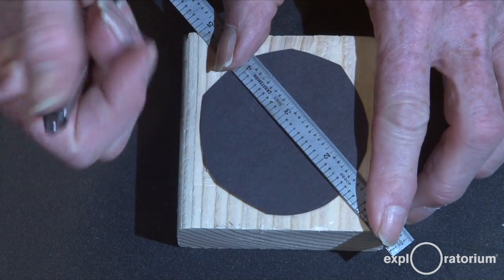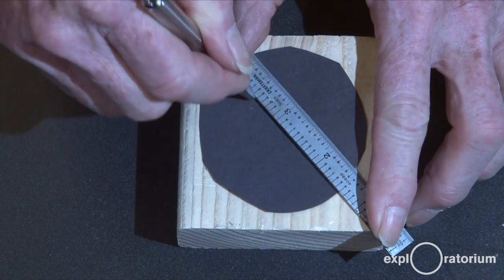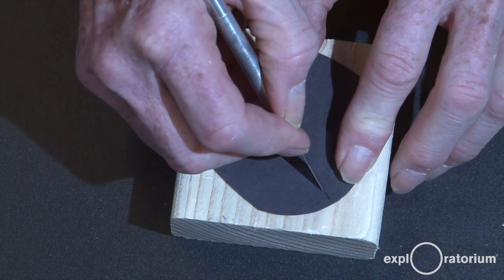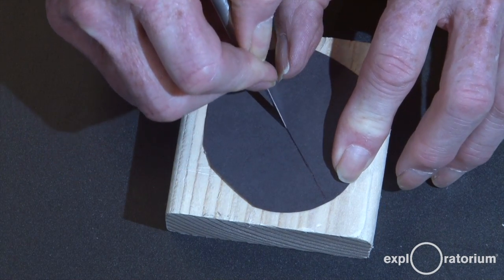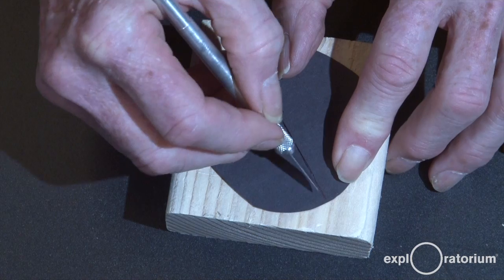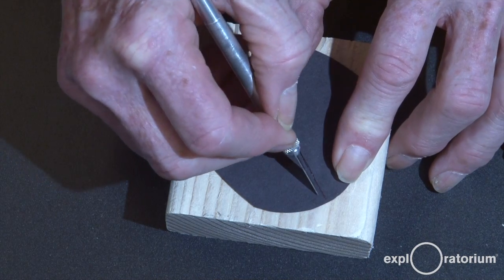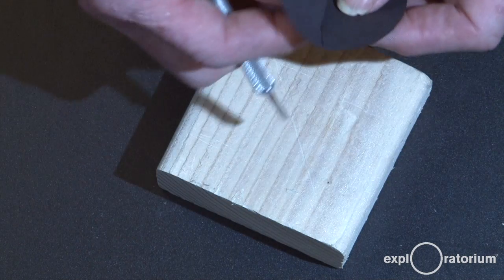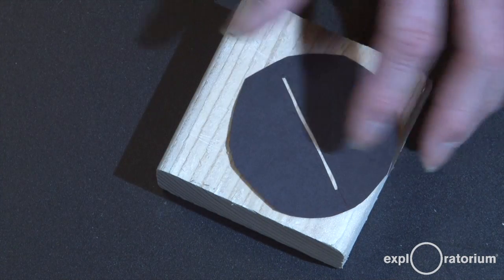So next I'm going to make a line across a diameter of my black disc. There it is. And then I'm going to use my razor knife to cut a slit, a nice straight slit down the middle, perhaps a millimeter wide. And there I have my nice slit.